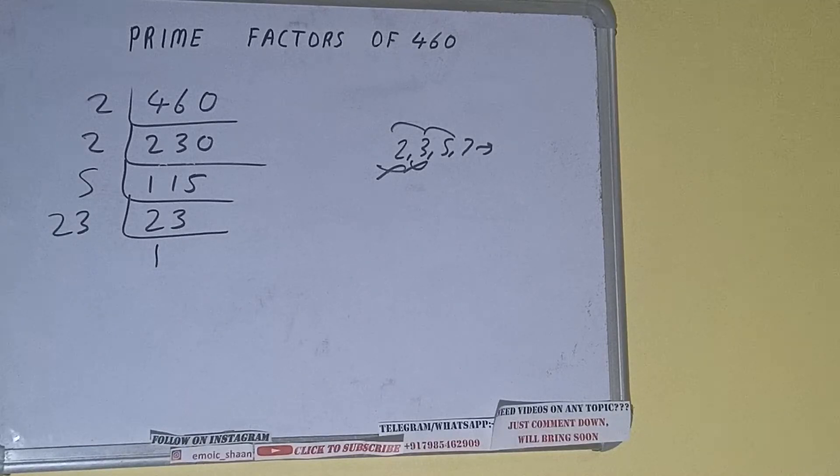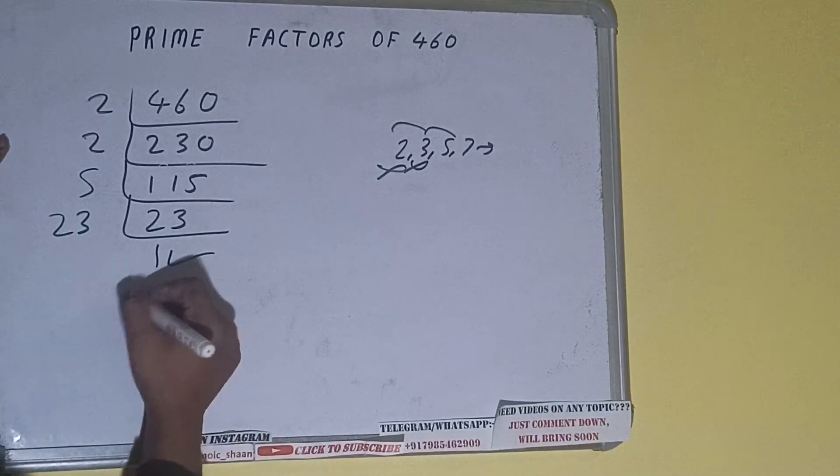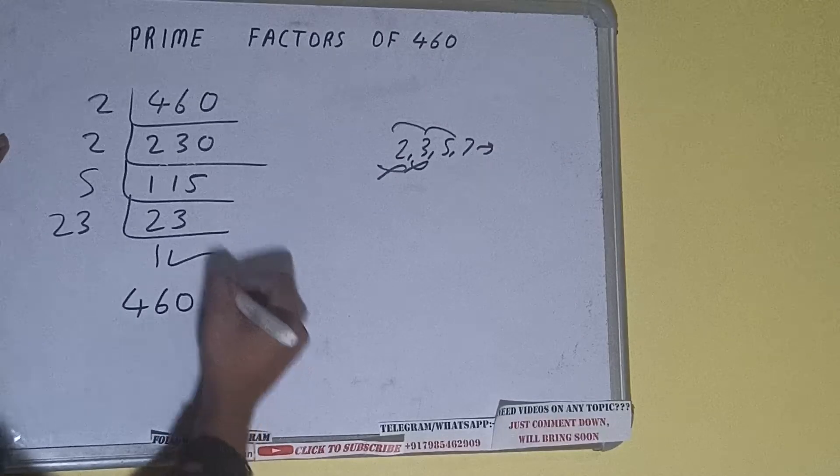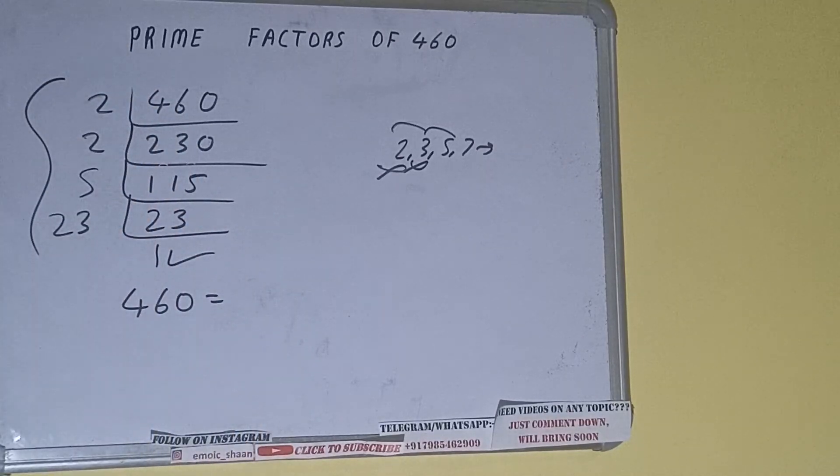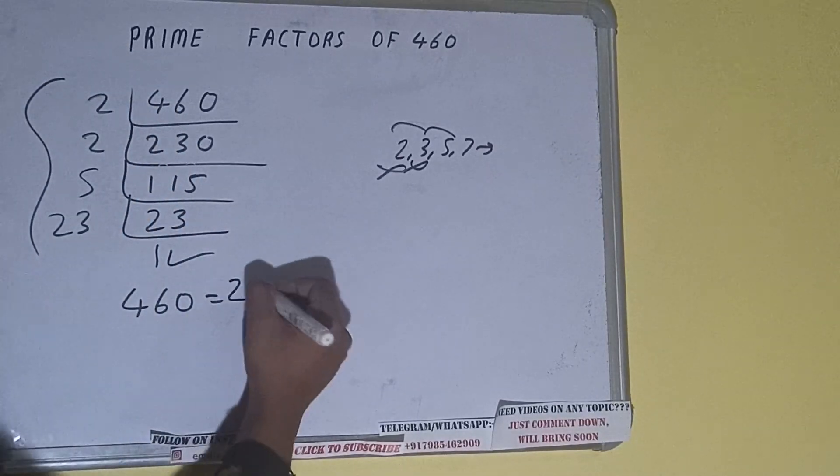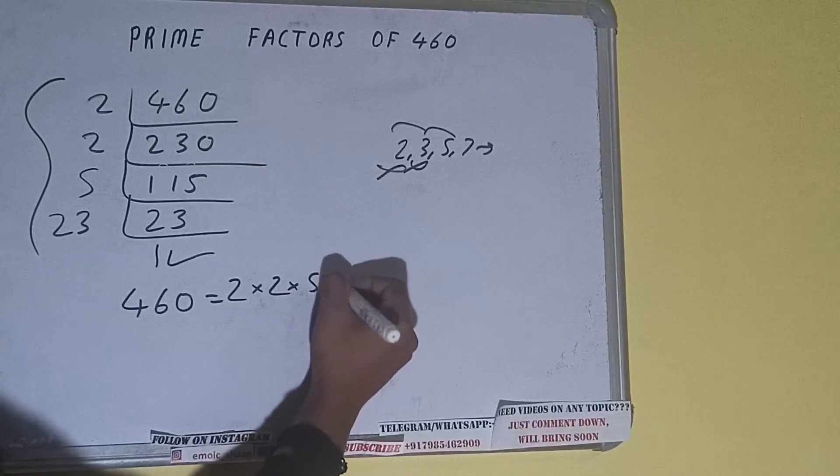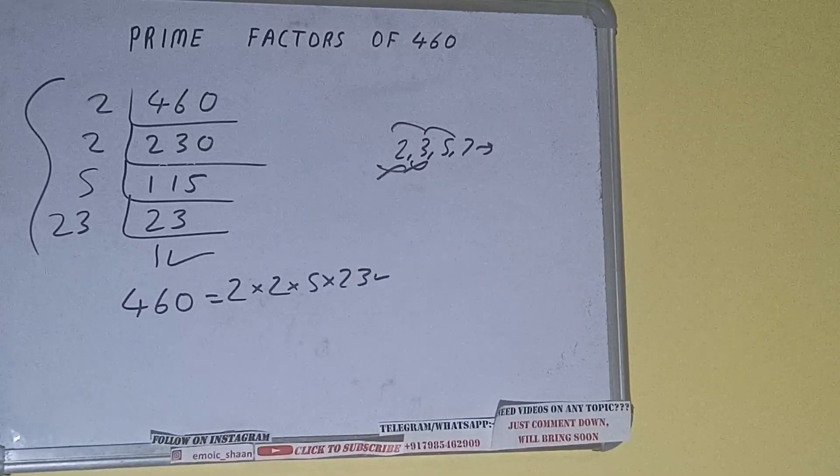Once we get 1 we need to stop and do one last thing that is prime factors of 460 equals to multiply whatever we have on the left hand side that is 2 cross 2 cross 5 cross 23. That will be the answer.